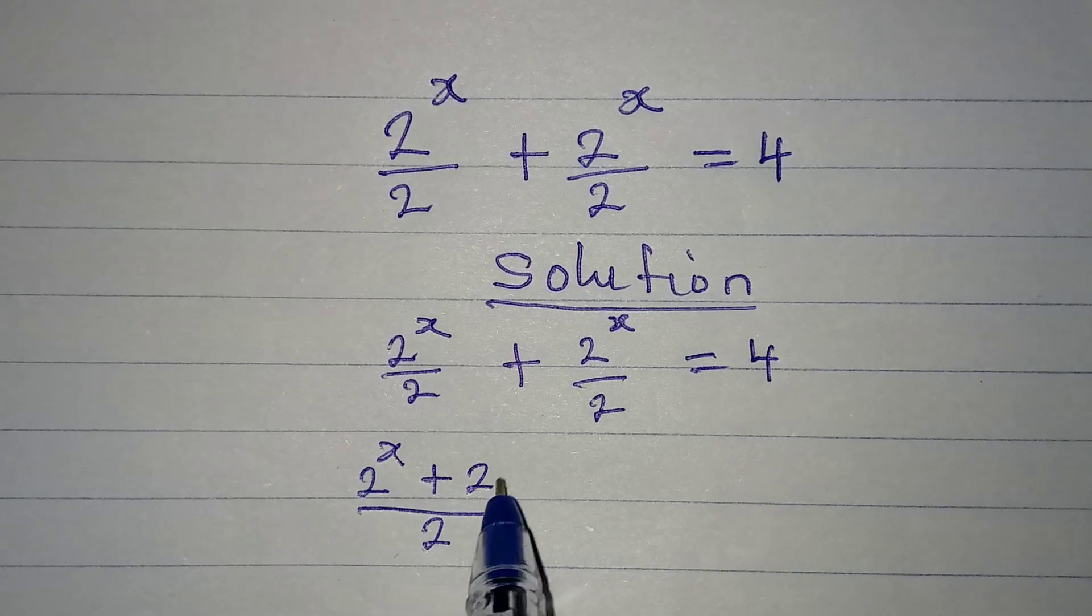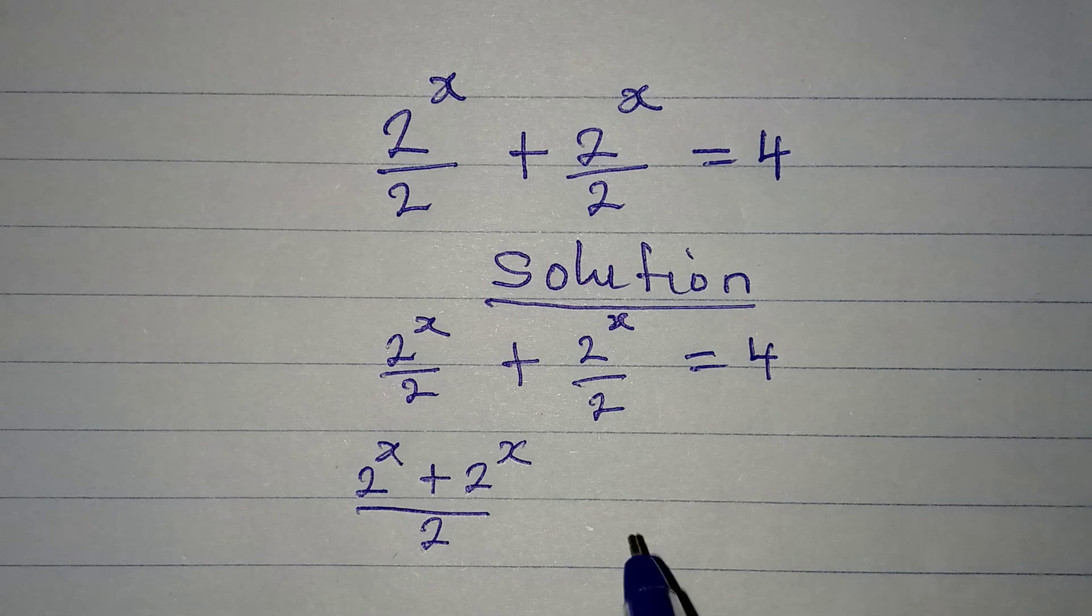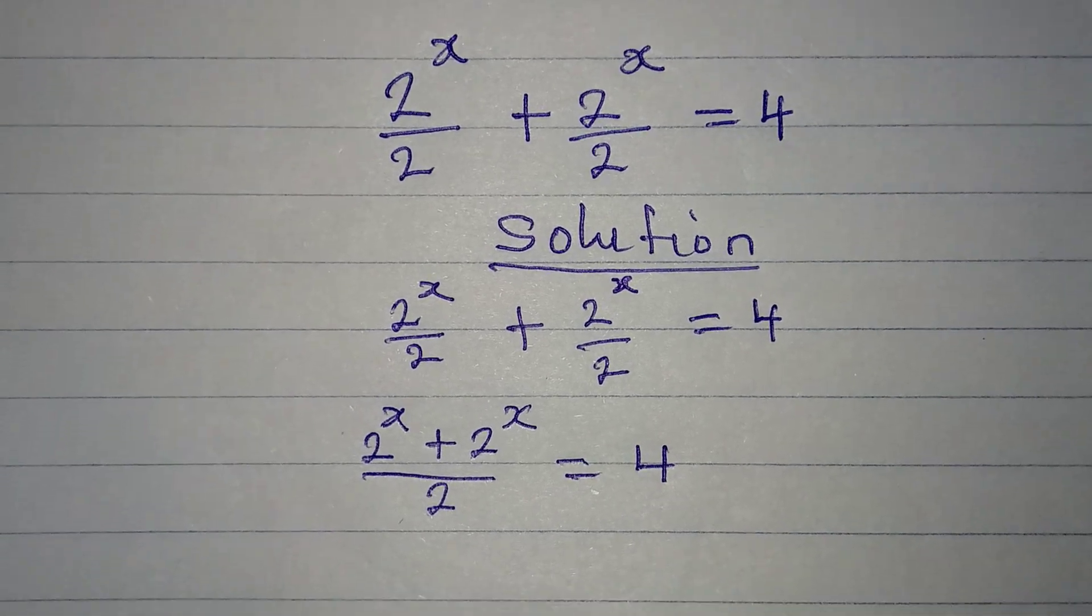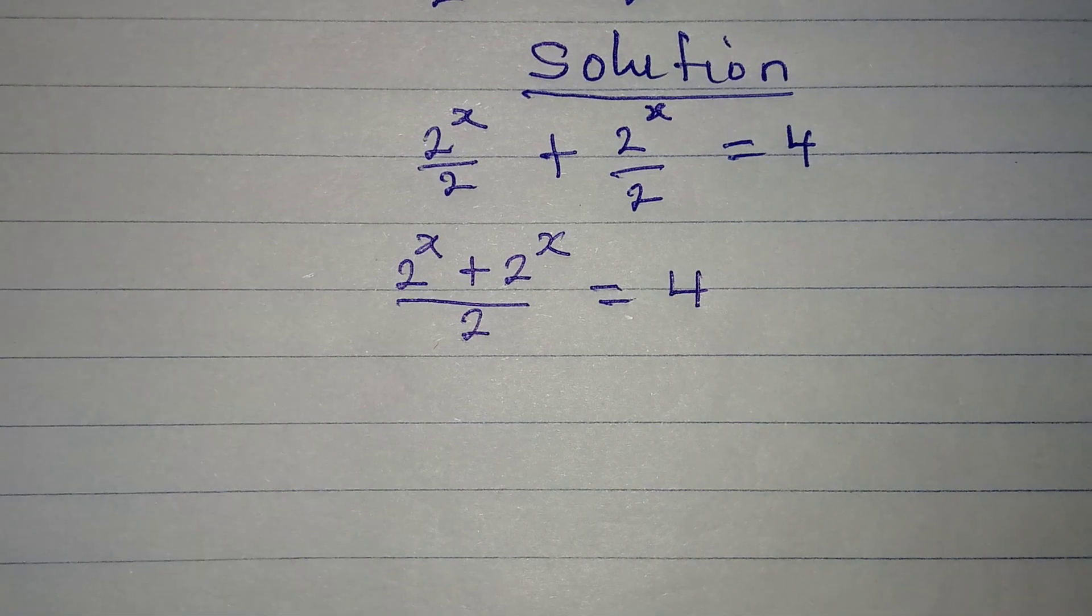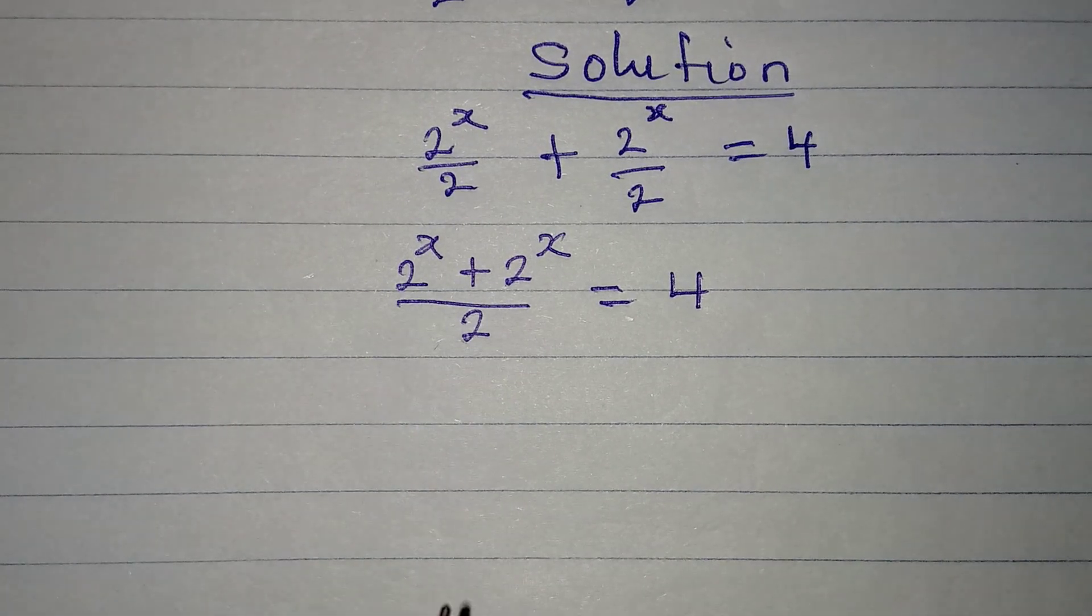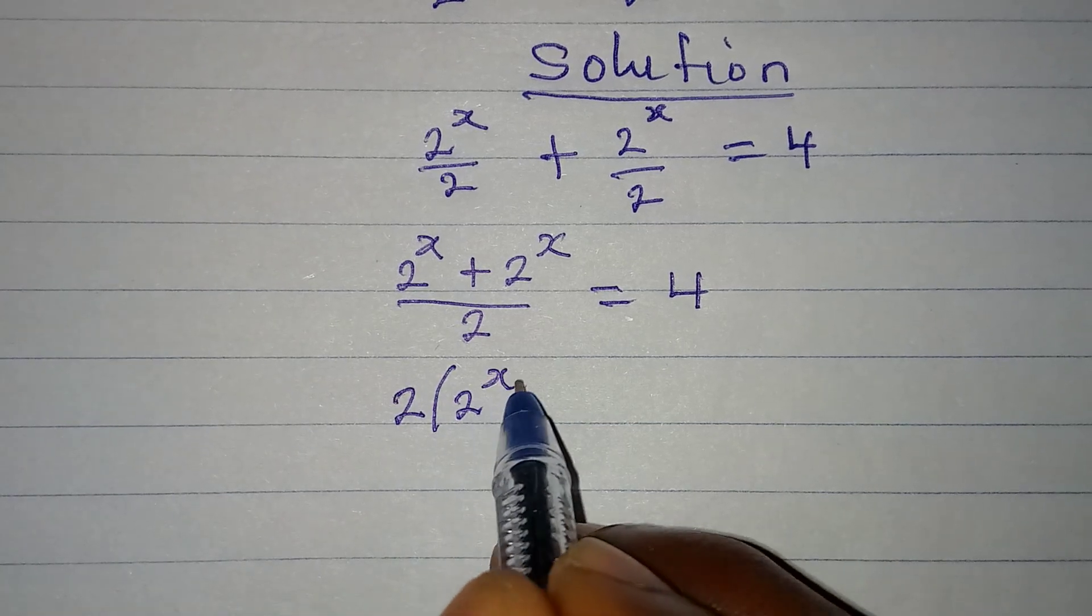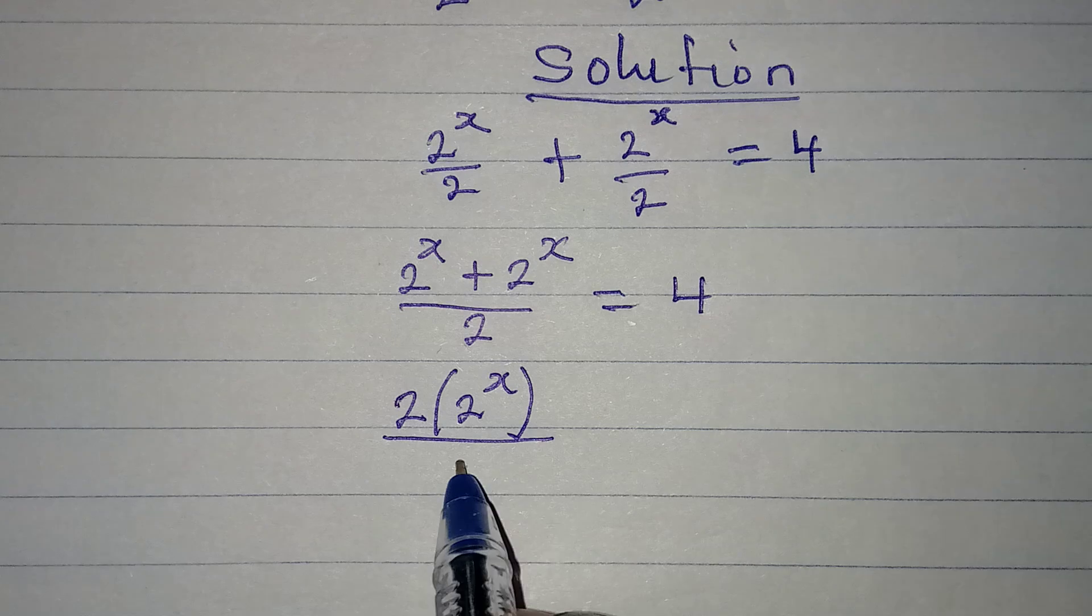This will be equal to 4. Now from here I can add the numerator, and I'm going to have 2 into bracket 2^x, and the whole of this is over 2.